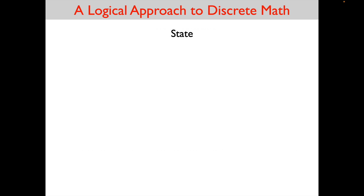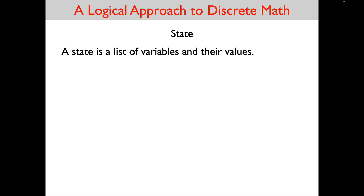There are two more concepts for this lecture. The next concept is the concept of state. A state is a list of variables and their values. For example, suppose you have a computation where there are two variables x and y. The notation (x, 5) represents the fact that variable x has the value 5, and (y, 6) represents the fact that variable y has the value 6. That list of variables and their values is an example of state.